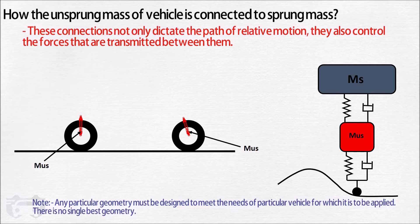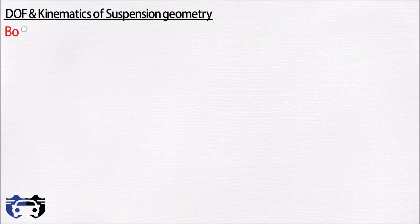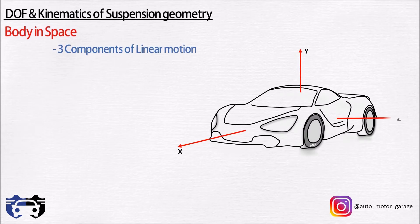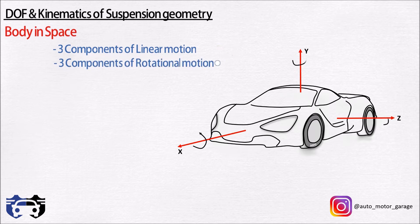For any body moving in space relative to another body, its motion can be completely defined by three components of linear motion and three components of rotational motion. A single body is said to have six degrees of freedom of motion in a three-dimensional world.